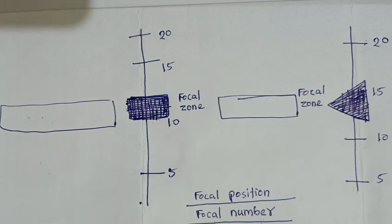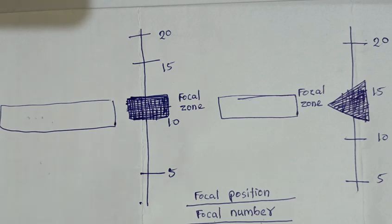Focal zone is a rotating knob — it comes into function by rotating the knob towards the right side or the left side, that is, by rotating in the clockwise direction or the anticlockwise direction.